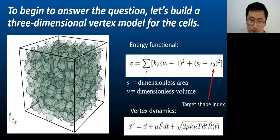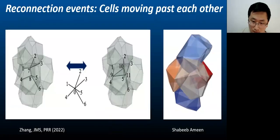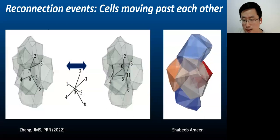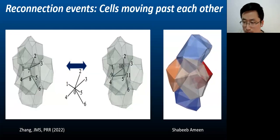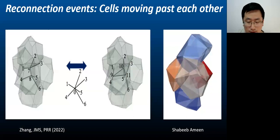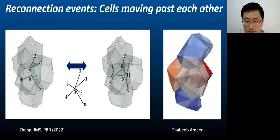We use Brownian dynamics to simulate the motion of vertices over time. Now that we have addressed the mechanical aspects of cells, we must also account for their dynamics. The cells can move past each other even while the tissue remains confluent. In two dimensions such movements are known as T1 transition or T1 events. In three dimensions such movements are known as reconnection events.